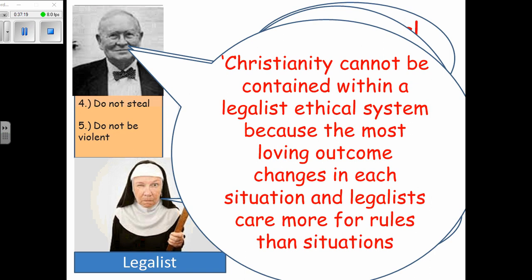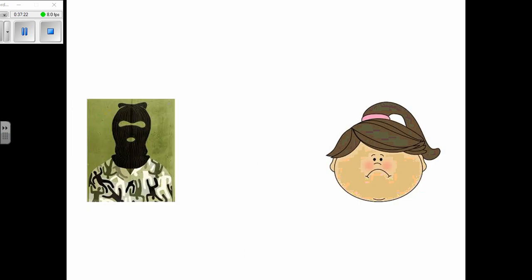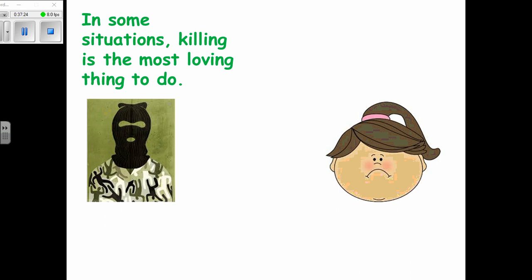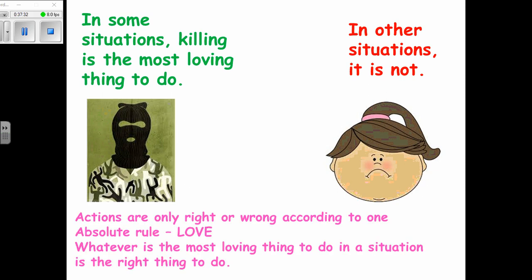You cannot have the same set of rules for all of life. In some situations killing is loving; in some situations killing is not loving — it depends on the situation. Actions are only right or wrong according to one absolute rule: whatever is the most loving thing in that situation is the correct thing.